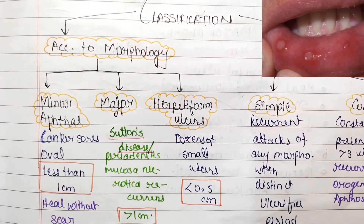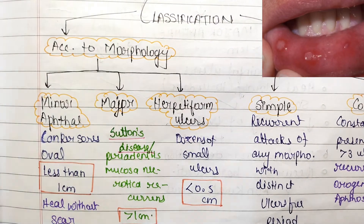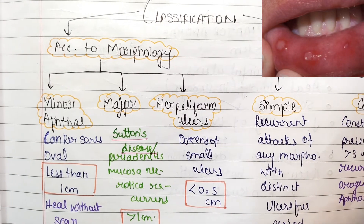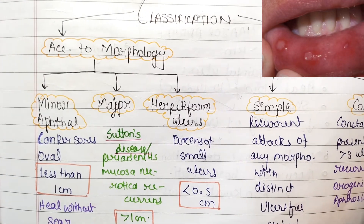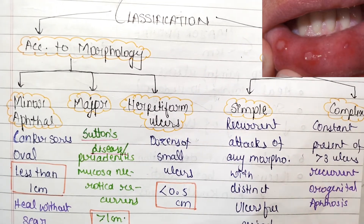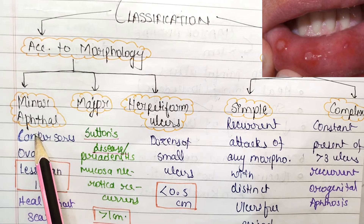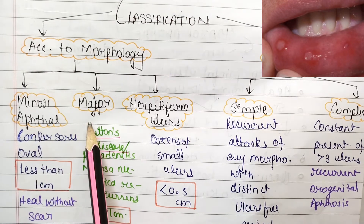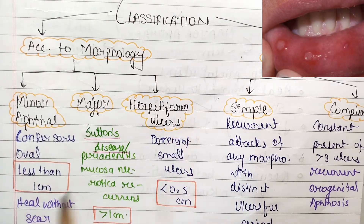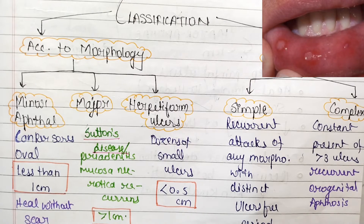Coming to the classification of aphthous stomatitis, it is majorly of two types: according to morphology and according to severity. According to morphology it is of three types: minor aphthae, major aphthae, and herpetiform ulcers.